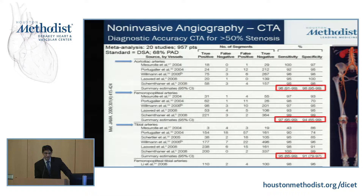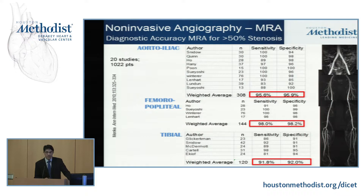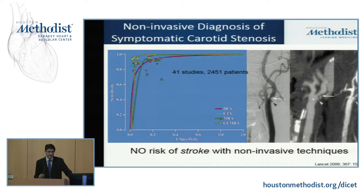Similarly, we have a large body of studies evaluating MRA against digital subtraction angiography, and the results are no different. No matter what arterial bed you're talking about, sensitivity and specificity are exceptionally high in the high 90s. This is not limited to the lower extremities — data for carotid arteries shows that both CT and MR, across multitudes of studies, are highly accurate for making diagnoses. And remember, this is a noninvasive technique, so there's no risk of stroke as opposed to taking the patient to the cath lab.